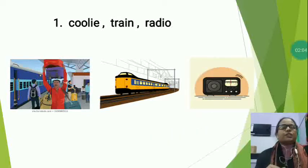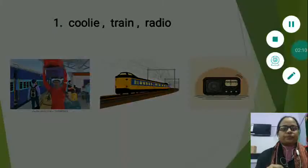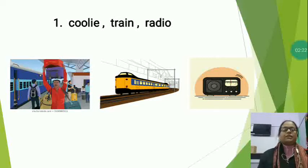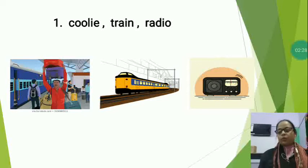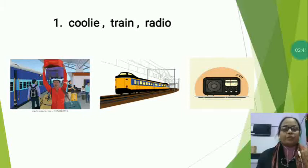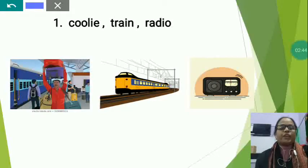Now the next is radio. Radio is a means of communication — it is known as one of the best ways of communication and one of the most wonderful gifts of science. It helps us send news and messages without wires. Now, Coolie and train you can find at the railway station, but radio is a means of communication. So which one is different? Radio is the different. So you will circle radio.